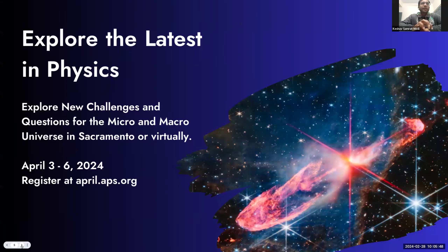Coming up also, the APS April meeting — join us in Sacramento, California, or virtually from around the globe for the exciting program theme: new challenges and questions for the micro and macro universe. Register at april.aps.org.